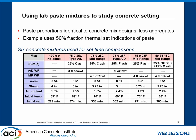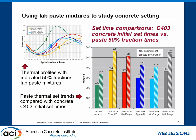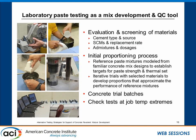Here's another example with several different concrete mixtures using the same cement sample — two different ashes (Class C and F), a ternary mix with slag and ash, and different admixtures — to give a range of performance. Here's how the C403 initial concrete setting times, shown as solid bars, compare to the 50% thermal fraction values, shown as striped bars. You see the same trends throughout. We've done so many of these that we have complete confidence in our ability to model what's going on in the concrete this way.